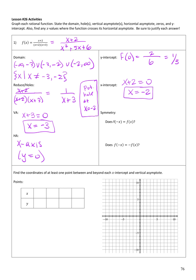For symmetry, I plug negative x into my original function and check whether I get exactly f of x back, or the opposite of f of x. f of negative x gives me negative x plus 2 over negative x squared plus 5 times negative x plus 6, which simplifies to negative x plus 2 over x squared minus 5x plus 6. This is not exactly the same as the original function, nor exactly the opposite, because not every sign changed. So this function has neither kind of symmetry.